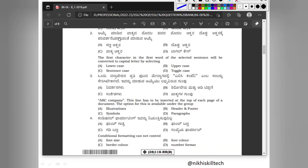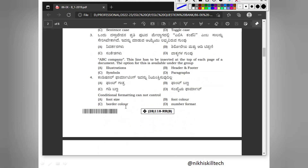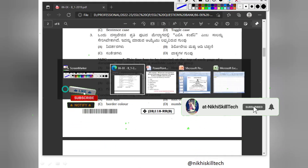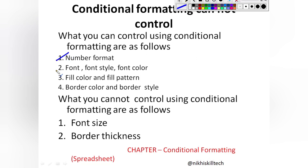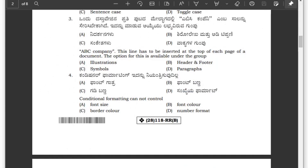Question number 4: Conditional formatting cannot control which of the following — font size, border color, font color, or number format? You need to find out which cannot be controlled by conditional formatting. Conditional formatting can control number format, font, font style, font color, fill color and fill pattern, border color and border style. What cannot be controlled using conditional formatting are font size and border thickness. The answer according to the question paper is font size. This is from the chapter Conditional Formatting in the Spreadsheet unit.